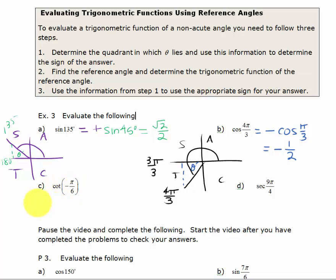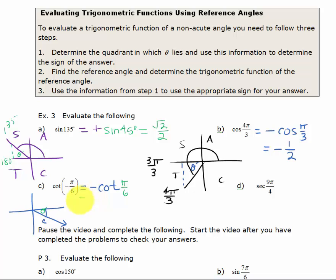Next, I've got the cotangent of negative π/6. When I draw negative π/6, that brings me to the fourth quadrant. The only thing positive in the fourth quadrant is cosine and its reciprocal, so cotangent is negative. It's going to be negative — the opposite of the cotangent of my reference angle. My reference angle is the positive acute angle, which is just π/6. So I know my answer is going to be negative, and the cotangent of π/6 — from your table or if you've memorized it — is the square root of 3. So the answer is negative square root of 3.